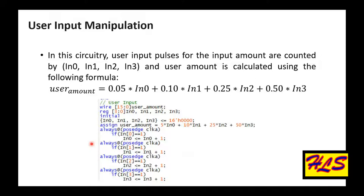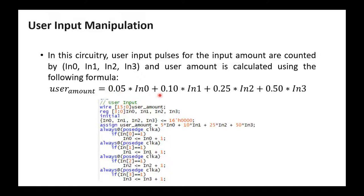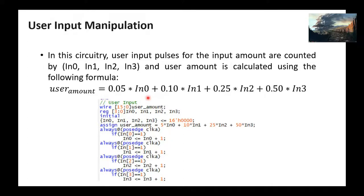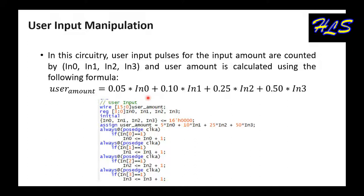The user input manipulation circuitry counts the amount inputted by the user. We have four buttons: the first is for 5 cents, the next for 10 cents, the next for 25 cents, and the last for 50 cents. Once these buttons are toggled, the user amount is calculated in real time, as we will demonstrate on the board.